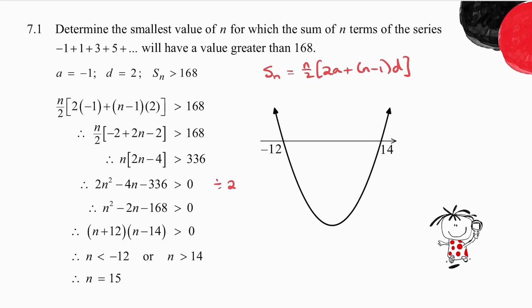Where is this quadratic graph, my parabola, where is it greater than 0? There and there. So n must be less than minus 12 or n must be greater than 14.